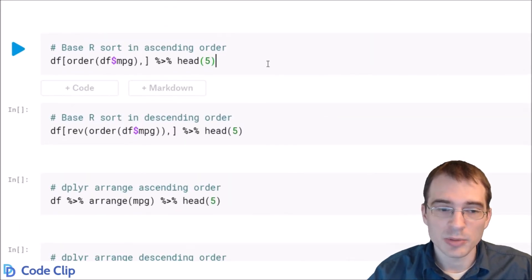Now to sort by a column in base R, what you want to do is take the column, in this case mpg, and you want to pass it into the order function, and then you use the result of that as the row index that you're indexing into the data frame with.